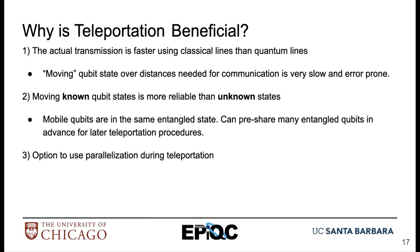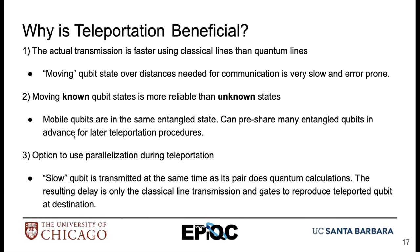There's also the option to use parallelization during teleportation procedures. This means that we can take that slow qubit that's being transmitted and, at the same time, its pair can do quantum calculations. The resulting delay is then only in the classical line being used for transmission and the gates used to reproduce the teleported qubit at its destination.